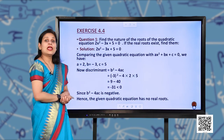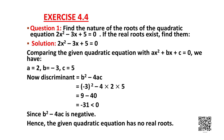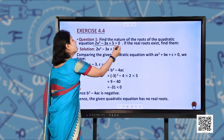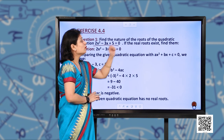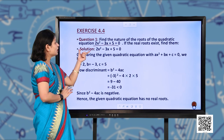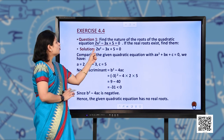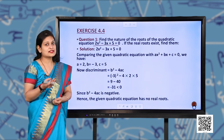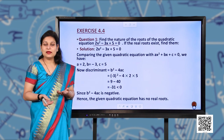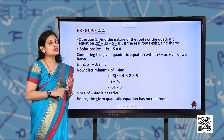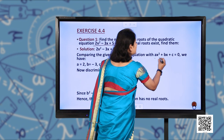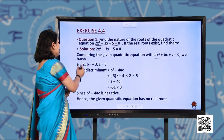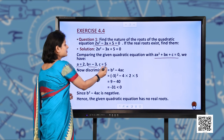Next, Exercise 4.4, question number 1: find the nature of the roots of the quadratic equation 2x² minus 3x plus 5 equals 0. If real roots exist, find them. Comparing the given equation with Ax² + Bx + C = 0, we have A as 2, B as minus 3, and C as 5.